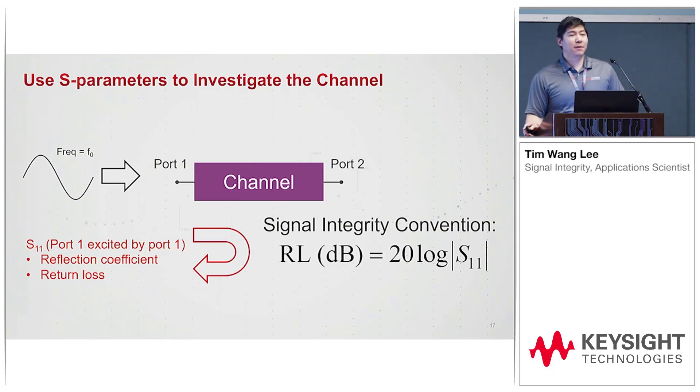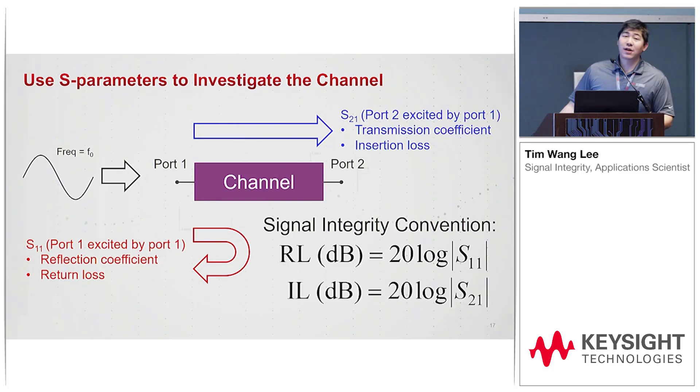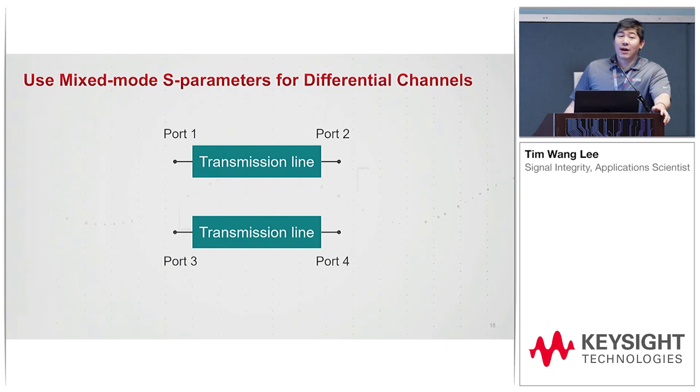In signal integrity we're pretty chill people, unlike those microwave engineers. You can quote S11 or return loss as a positive or negative number, we will understand. Since we're not dealing with active channels, if you're taking a look at what's going through, the S21, we call it the transmission coefficient, and it's also the insertion loss. Likewise, IL can be quoted as positive or mostly negative numbers.